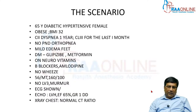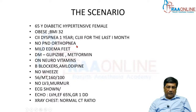Now this is a clinical scenario. We are looking at a patient: 65 years old, diabetic, hypertensive female with obesity, presenting with dyspnea for one year, now class three for the last one month. No orthopnea, mild edema. Current medications include glipizide, metformin, neurovitamins, beta blockers, and amlodipine.